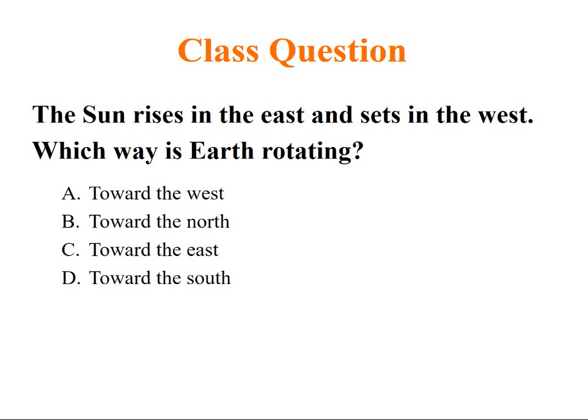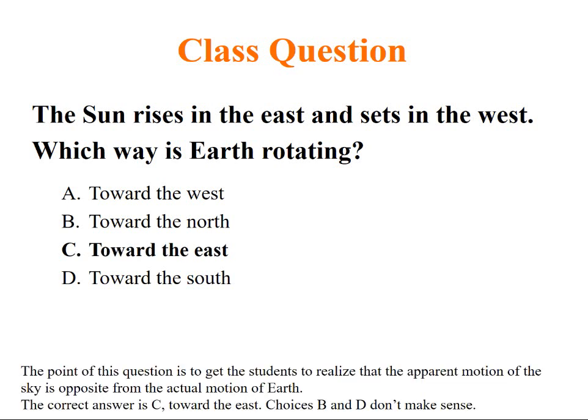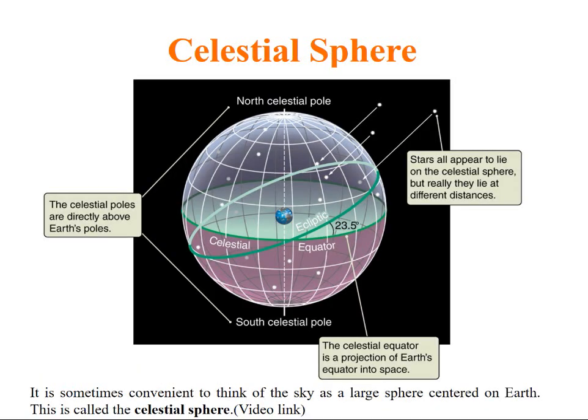We know the sun rises in the east and sets in the west. So the question is: which way is Earth rotating? Answer is towards the east, not towards the west. The point of this question is to get students to realize that the apparent motion of sky is opposite from actual motion of Earth. Earth is rotating towards east, while we see sun rises from the east and sets in the west.